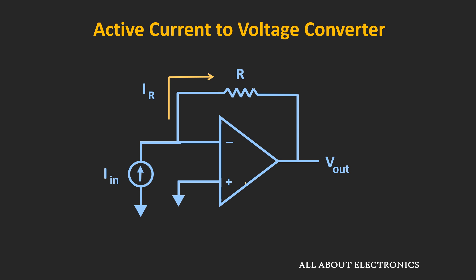Here we are assuming the op-amp is ideal, so no current flows into the op-amp terminals. If we apply KCL at node A, then the input current IN should be equal to the current flowing through resistor R. That will be equal to (0 − Vout) divided by R. So we can say that the output voltage Vout will be equal to minus the input current times the value of resistor R.